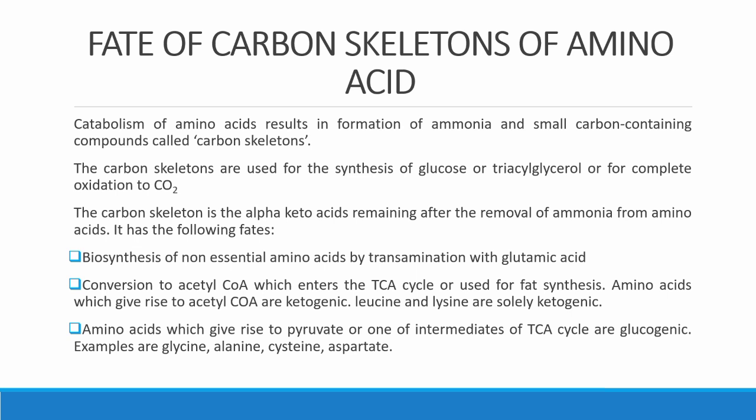Carbon skeletons that are converted to intermediates of the TCA cycle or to pyruvate are termed glucogenic amino acids. Examples include aspartate, which undergoes transamination and is converted to oxaloacetate, and alanine, which also undergoes transamination to form pyruvate.